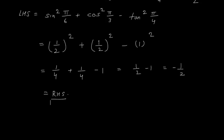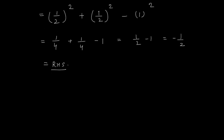LHS is equal to RHS. Therefore, sin square pi by 6 plus cos square pi by 3 minus tan square pi by 4 is equal to minus half.